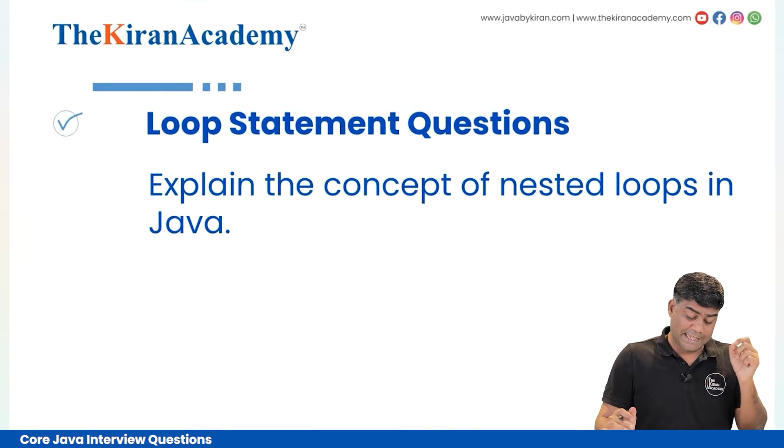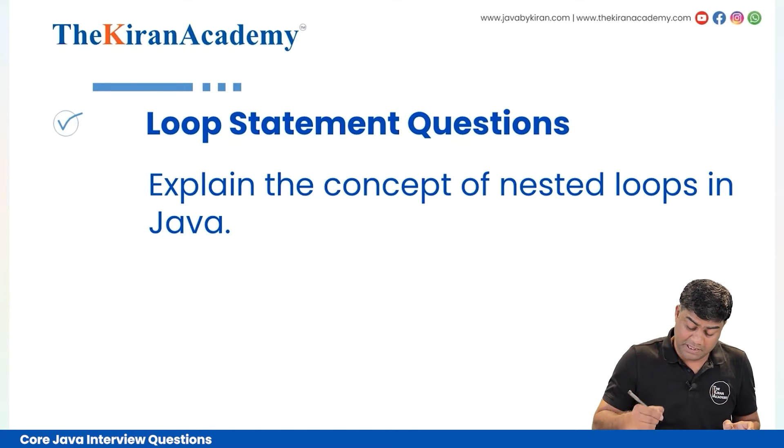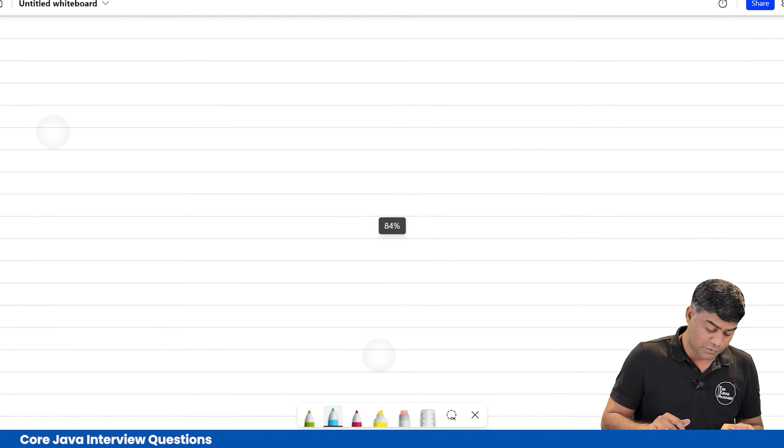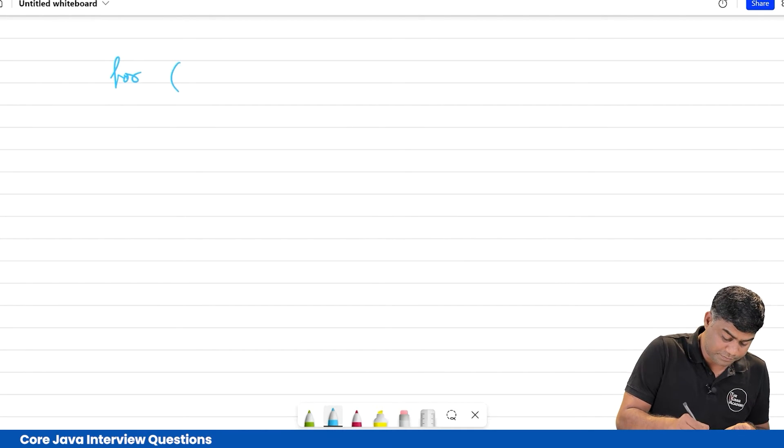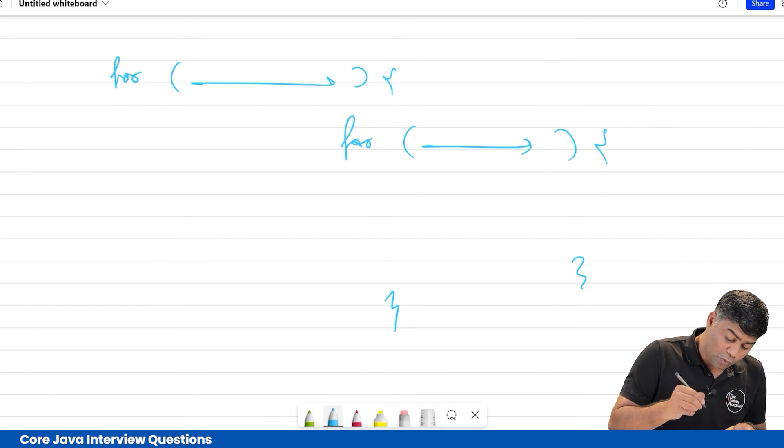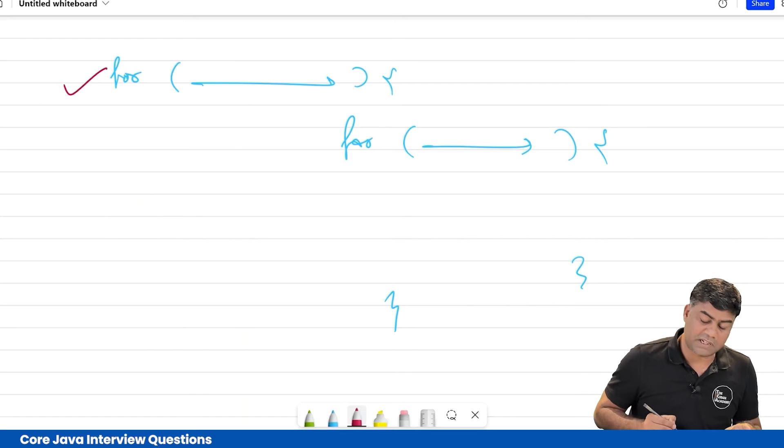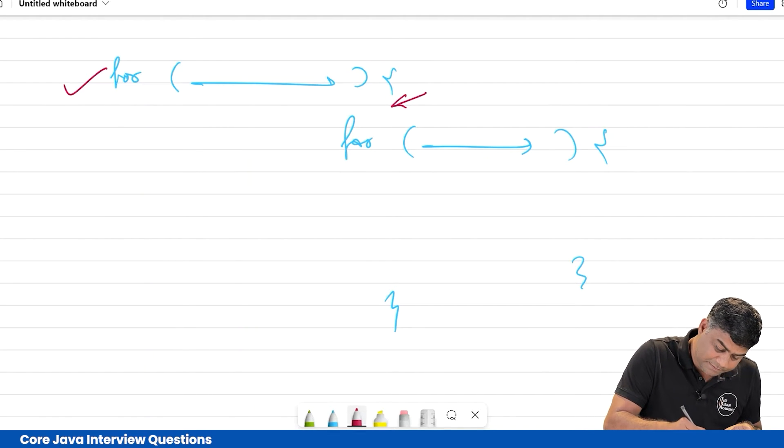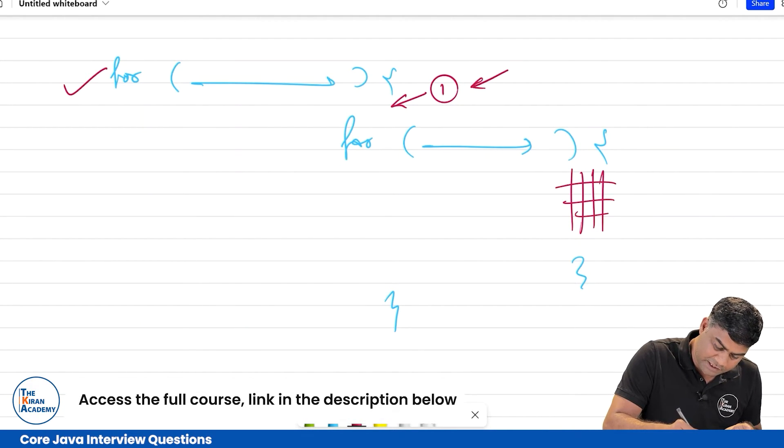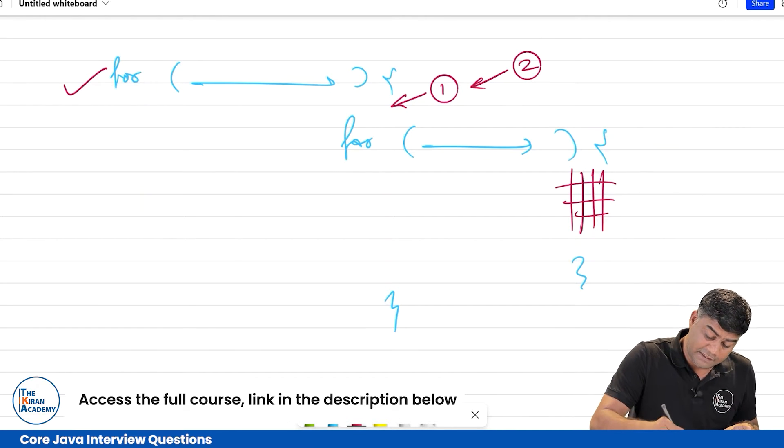Next question: explain the concept of nested loop in Java. See, in Java you can have multiple for loops. Some conditions, something will be here. Now what happens here is these for loops start executing once, and then this for loop will get finished. Then again this for loop will start for second number and again this for loop will execute completely.